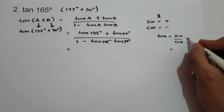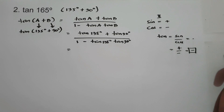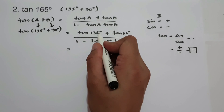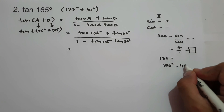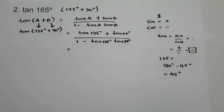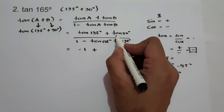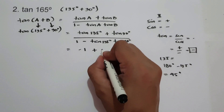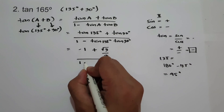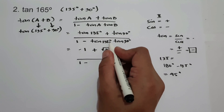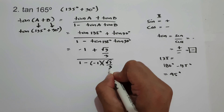Therefore, tangent in quadrant 2 is negative. The reference angle for 135° is 180° - 135° = 45°, so tangent 135° = -1. We have: (-1 + √3/3) / (1 - (-1)(√3/3)), which is (-1 + √3/3) / (1 + √3/3).